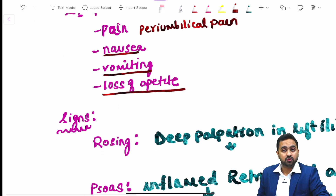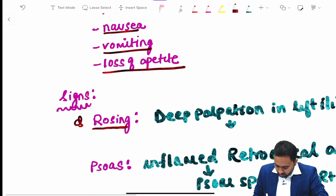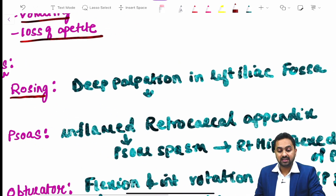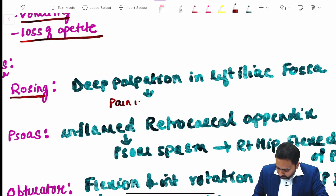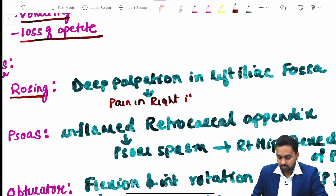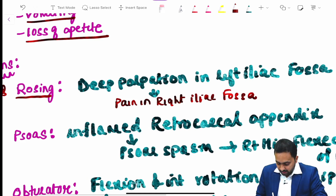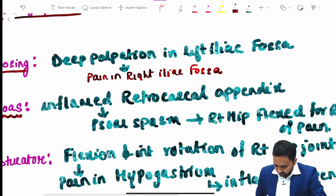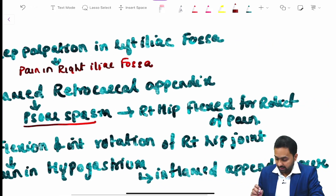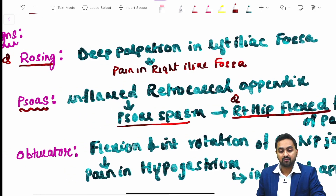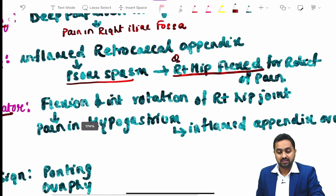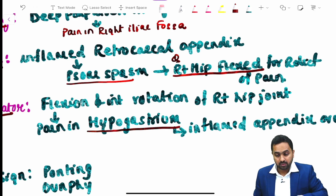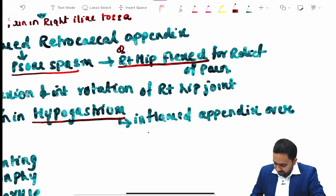Signs associated with appendicitis include Rovsing's sign, where deep palpation in the left iliac fossa causes pain in the right iliac fossa. The Psoas sign occurs in an inflamed retrocecal appendix causing psoas spasm, relieved by flexing the right hip. The obturator sign is elicited when flexion and internal rotation of the right hip joint causes pain in the hypogastrium, because the inflamed appendix overlies the obturator internus.